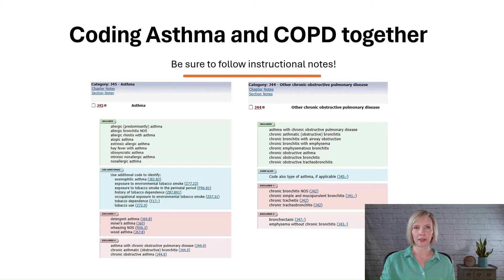In this next case, the patient has been diagnosed with both mild intermittent asthma and COPD. According to the alphabetic index, we assign code J4489 to capture asthma with COPD. Additionally, we refer to the instructional note in the tabular, which directs us to code the specific type of asthma. In this case, since the type of asthma was identified as mild intermittent asthma, an additional code for the specific type of asthma is assigned.